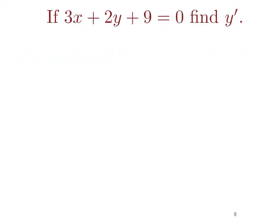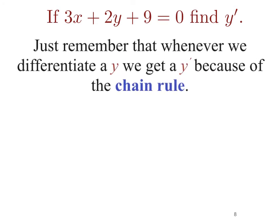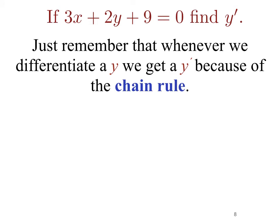Let's look at a second example. If 3x plus 2y plus 9 equals 0, find y prime. Again we have to remember that whenever we're differentiating a y, because it is the dependent variable, we get a y prime, and that's because of the chain rule. Differentiating the first term 3x we get 3.